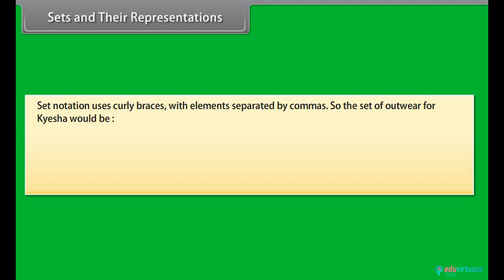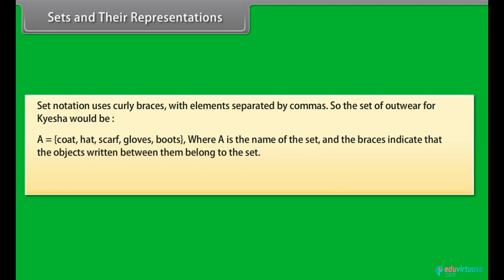Set notation uses curly braces with elements separated by commas. So, the set of outerwear for Kesha would be A equals coat, hat, scarf, gloves, boots. Where A is the name of the set and the braces indicate that the objects written between them belong to the set.